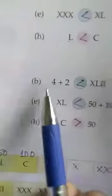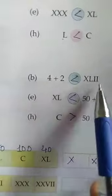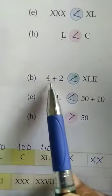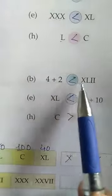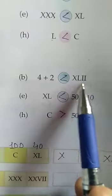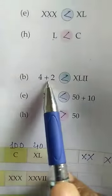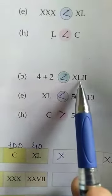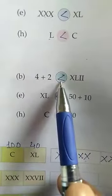Now question number B: 4 plus 2 and XLII. We can see that 4 plus 2 is 6 and XLII is 42. So 6 is smaller than 42, so this sign will come here.